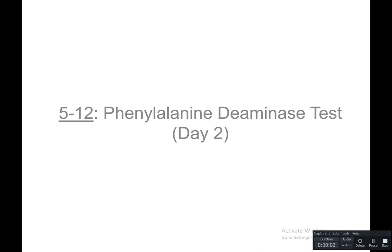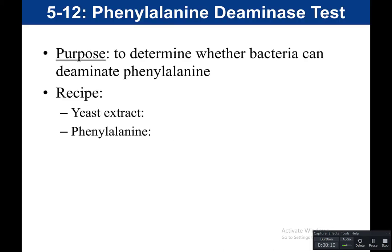Now we're going to talk about the readout for our phenylalanine deaminase test — this would be day two of our experiment. The purpose is to determine whether bacteria can deaminate phenylalanine. The media is called a phenylalanine slant. In the media we have yeast extract, which is there for general growth as an undefined component to allow the bacteria to grow. Then we have phenylalanine, which is our amino acid substrate — that's what we're testing to see if bacteria can deaminate.